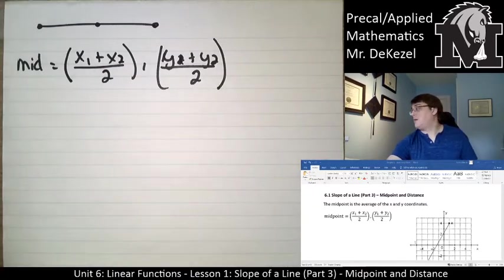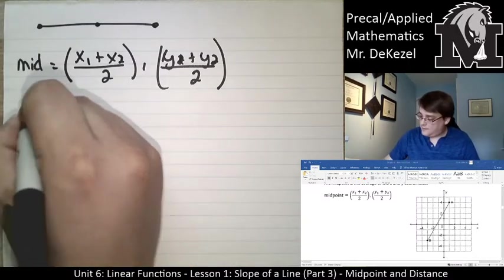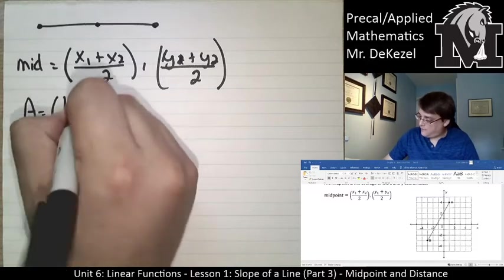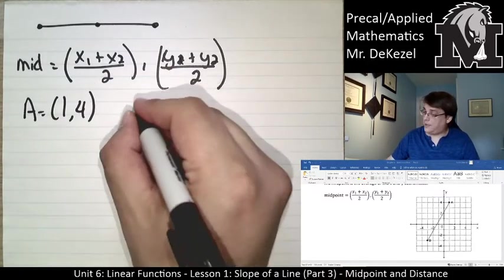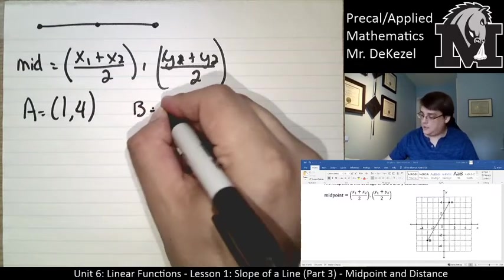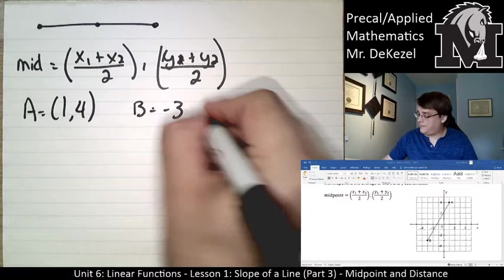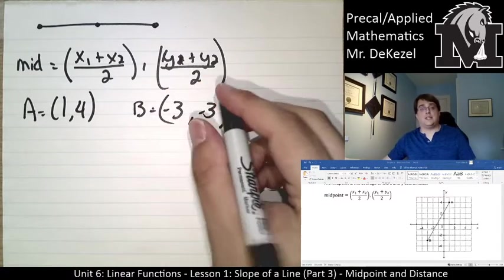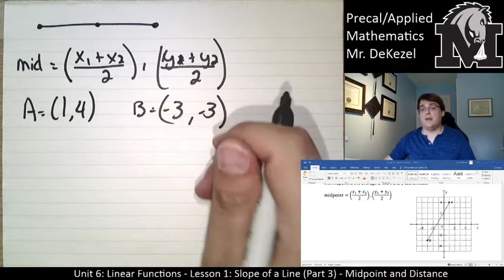So we're given a graph to the right. We have point A to be the point (1, 4), it is 1 over and 4 up. And then we have point B to be (-3, -3), it is 3 over and negative 3 down. So we can take the x-points, average them, take the y-points and average them, and find out what the midpoint is.